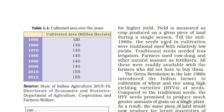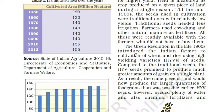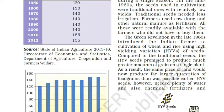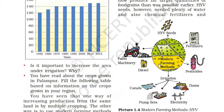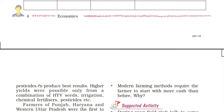Till the mid-1960s, seeds used in cultivation were traditional ones with relatively low yields, needing less irrigation. Farmers used cow dung and other natural manures as fertilizers, which were readily available and did not need to be bought. The Green Revolution in the late 1960s introduced Indian farmers to cultivation of wheat and rice using High Yielding Variety (HYV) seeds. HYV seeds promised to produce much greater amounts of grain on a single plant, meaning the same piece of land could produce far larger quantities of food grain. However, HYV seeds needed plenty of water, chemical fertilizers, and pesticides to produce best results.